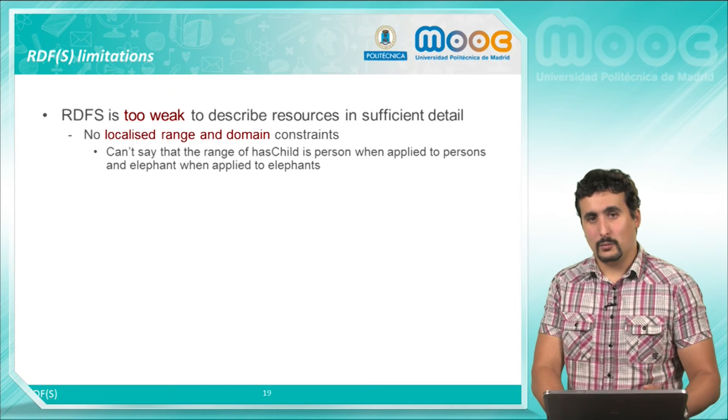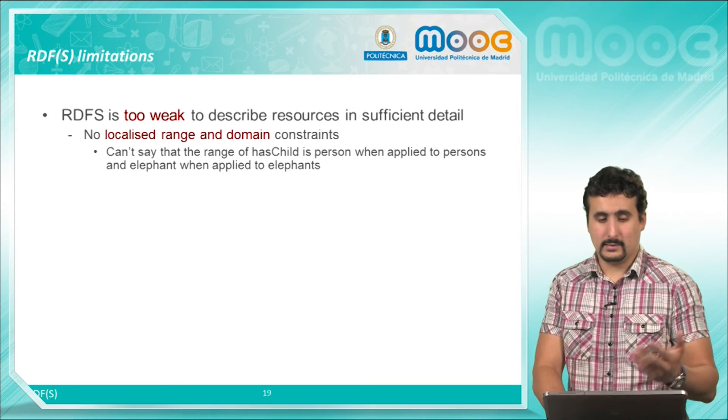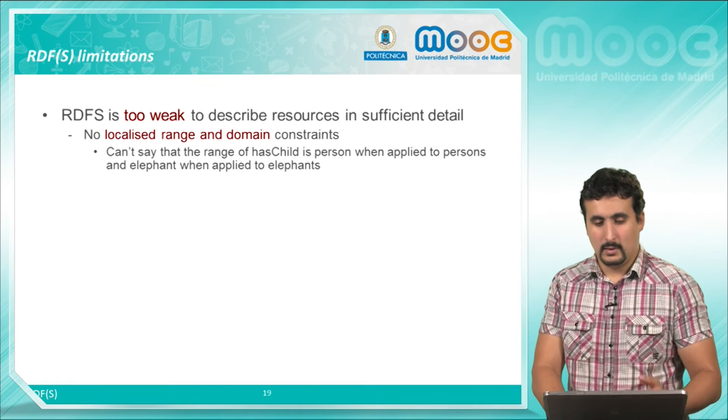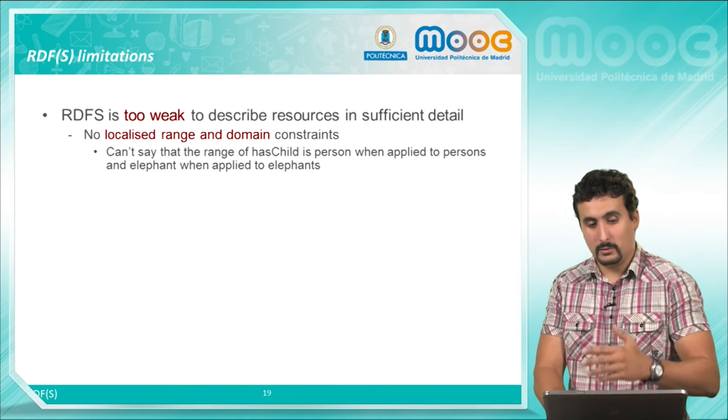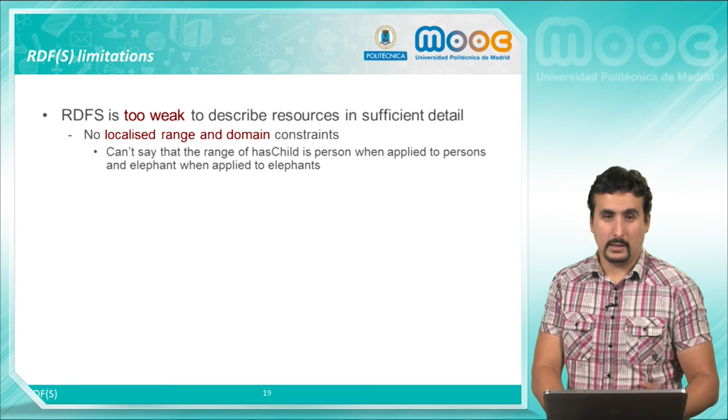We cannot localize the range and domain of a property. We cannot say things for example such as that the range has child is person when applied to persons and elephant when applied to elephants.